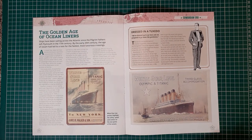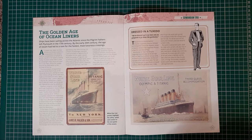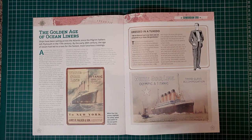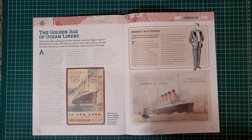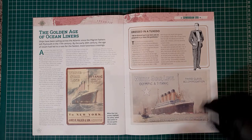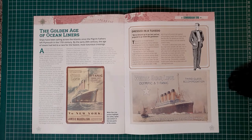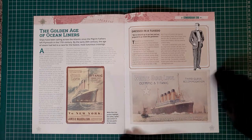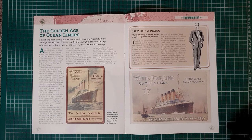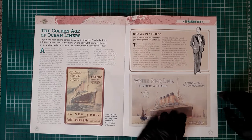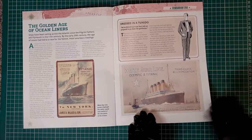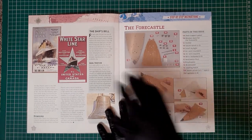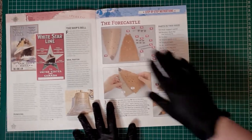The Golden Age of Liners. Ships have been sailing across the Atlantic since the Pilgrim Fathers left Plymouth in the 17th century, but by the early 20th century the age of steam had led to the race for the fastest and most luxurious crossings. One of the reasons why Titanic was built was because of the Lusitania and the Mauritania with the Cunard Line. White Star Line wanted faster and bigger ships, so they commissioned Olympic, Titanic, and Britannic. White Star Line Olympic and Titanic were the world's largest steamers at the time.